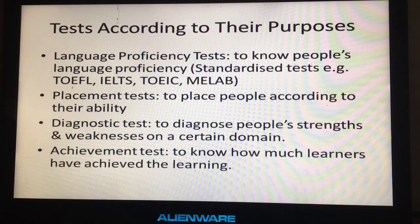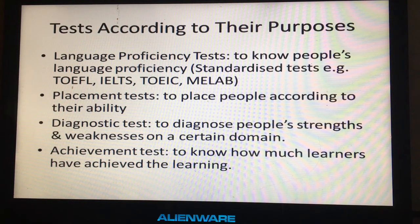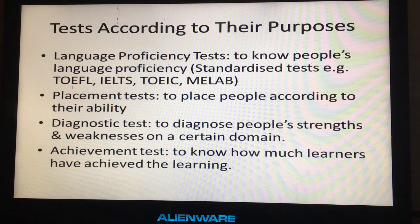The third is the diagnostic test, which diagnoses people's strengths and weaknesses in a certain domain. If teachers want to know students' strengths and weaknesses on a certain lesson, they can do a diagnostic test. The last one is the achievement test — it measures how much students have achieved and how much learning they have made. Examples are the midterm test and the final term test.